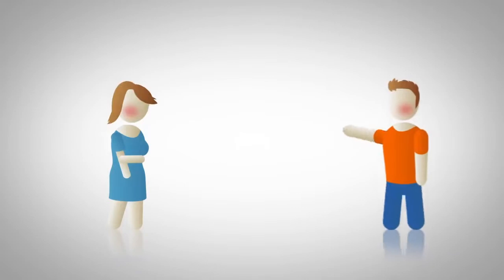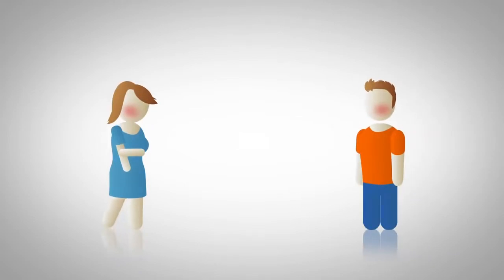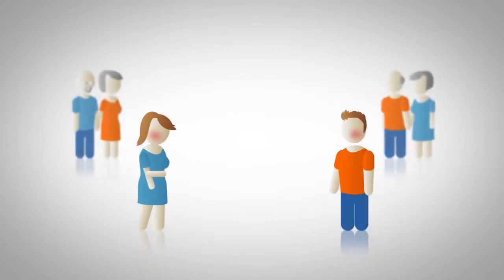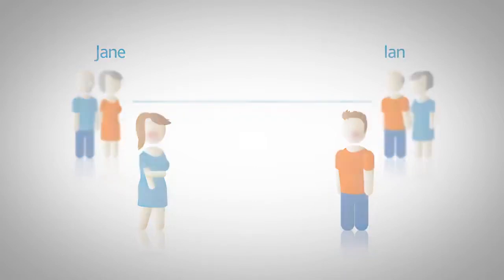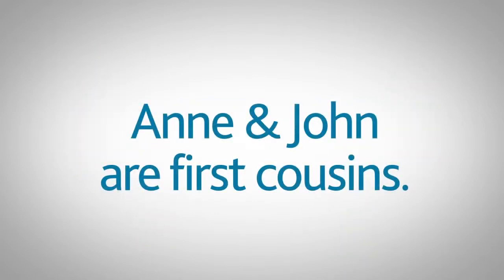Consanguinity describes a situation where a couple who are planning to have children are related to each other by blood. In this example, Anne's mother Jane is the sister of John's father Ian, and so Anne and John are first cousins.